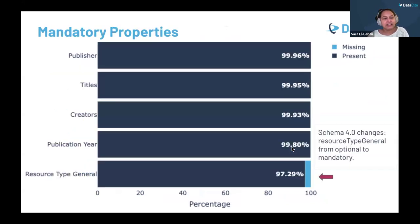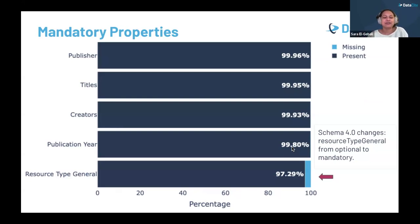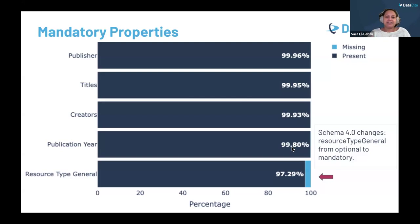Looking at just the mandatory properties, it's pretty well annotated. I want to highlight an interesting case: the resource type general property is mandatory, but sits at about 97.3% completeness. The reason goes back to changes made in schema 4.0 in 2016. Before this version, that property was optional, so many older entries that don't have this information filled out account for that small gap.